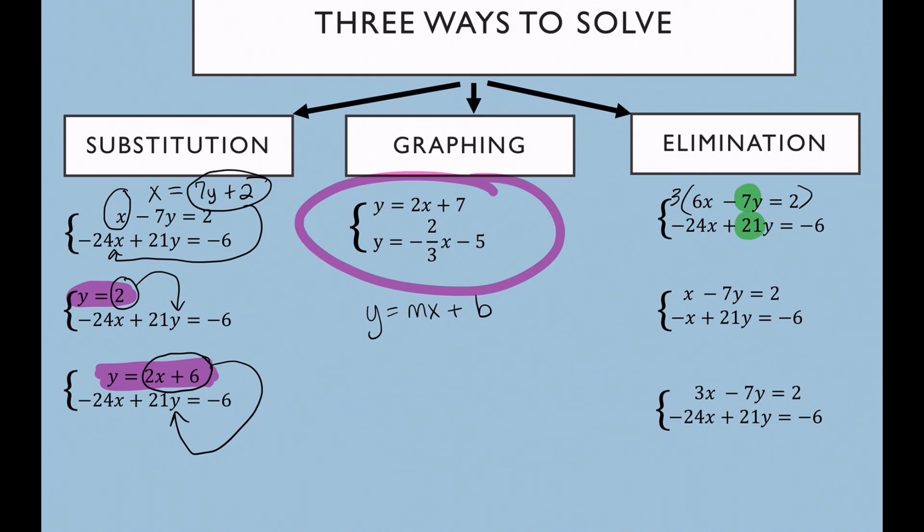On the bottom equation here, you will see that I've already got a positive X and a negative X. Again, right away I can see that this is awesome. These are going to make 0X. I don't have to write 0X and then I'm going to end up with 14Y equals negative 4 and be able to solve for Y and then plug that back in to solve for X. This is another great example of elimination, where elimination would be helpful.